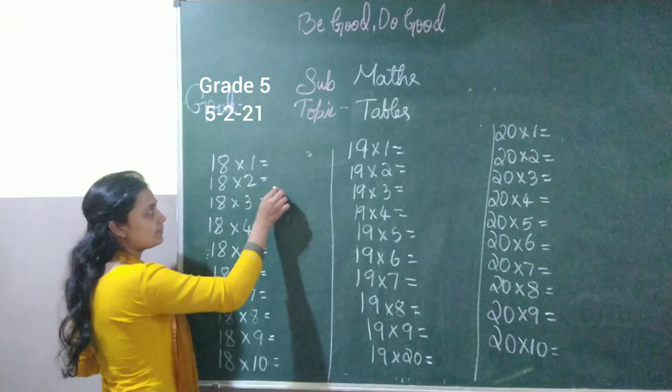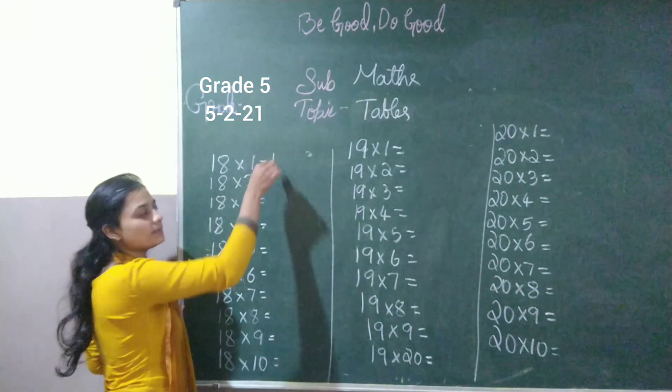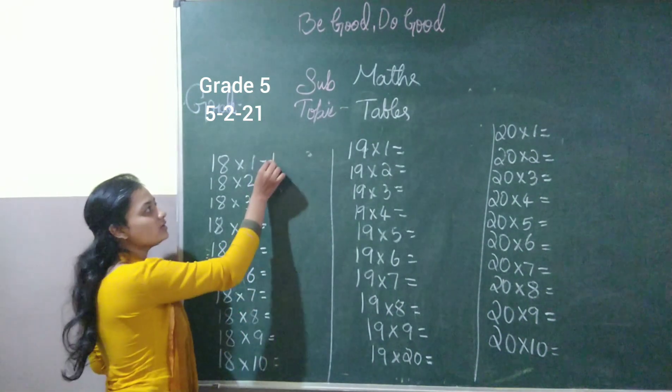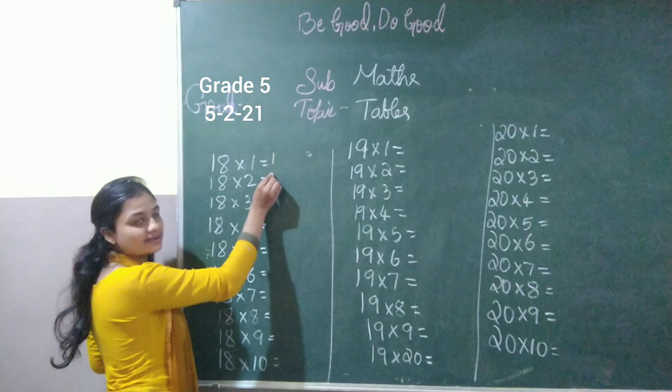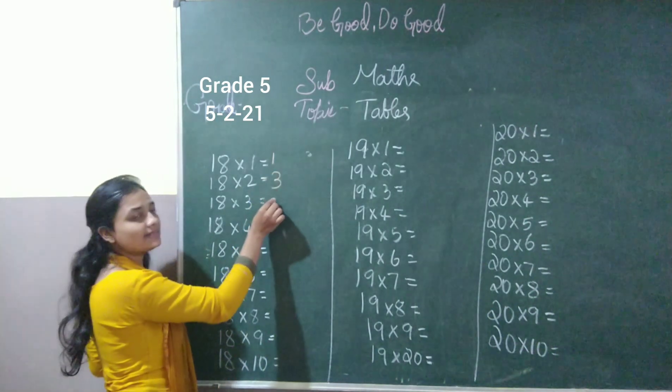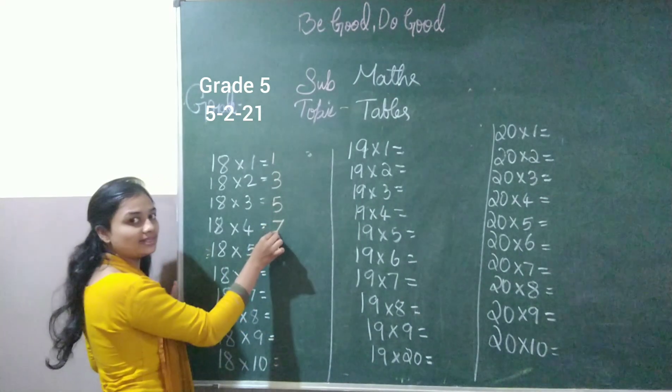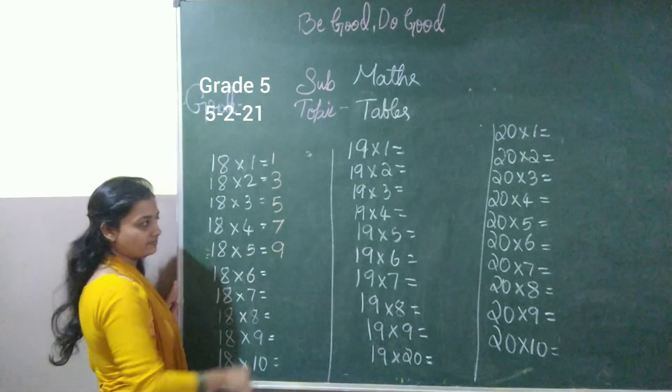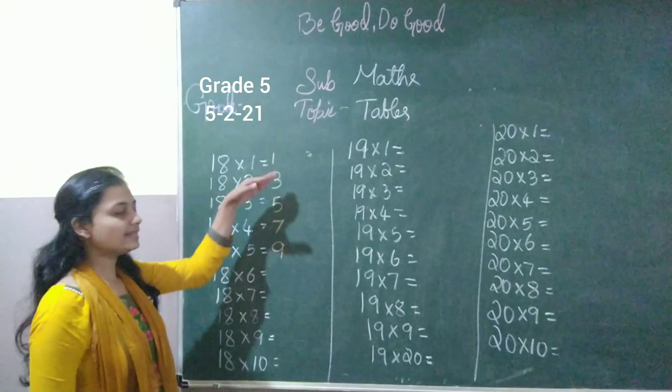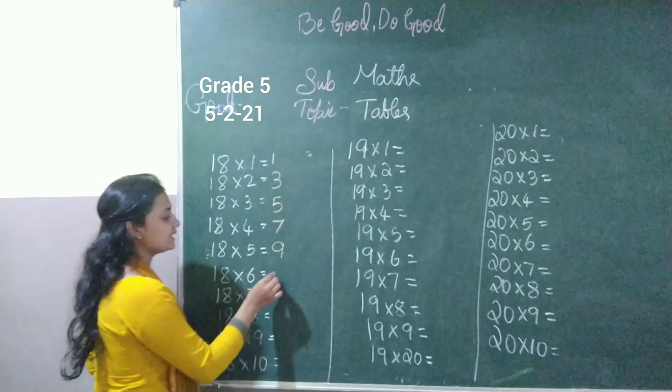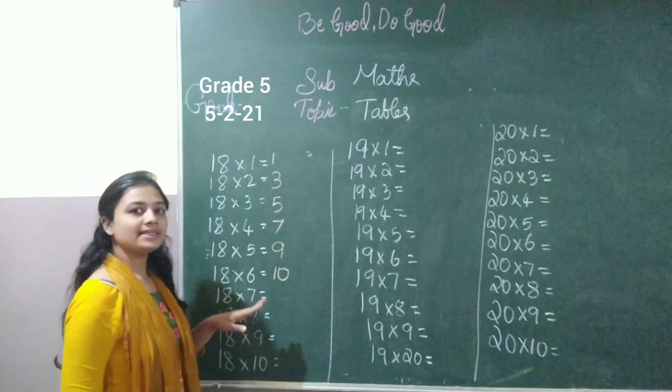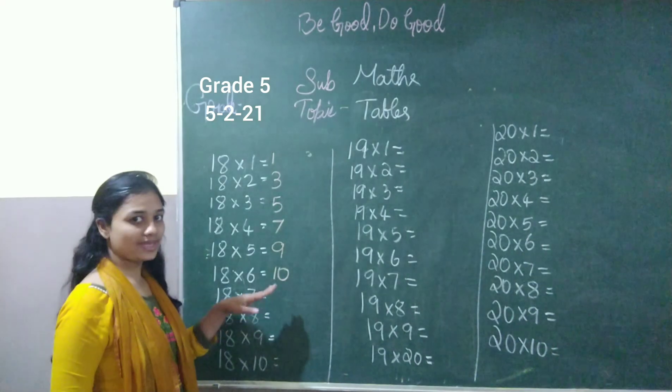So let's start skip counting from 1, skip counting of 2. So after 1, what is the number that I will write here? 3, next, 5, next, 7 and then 9. So 9, I will write skip counting. Then I will write 10 and then start skip counting of 2 again from 10.